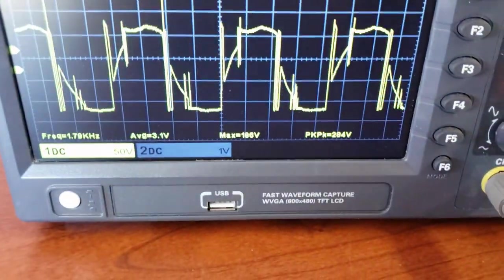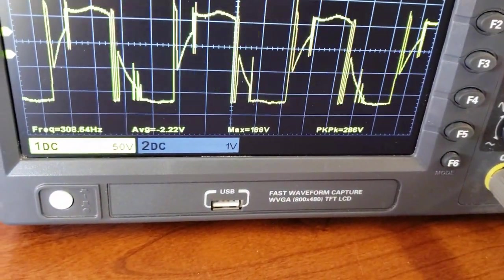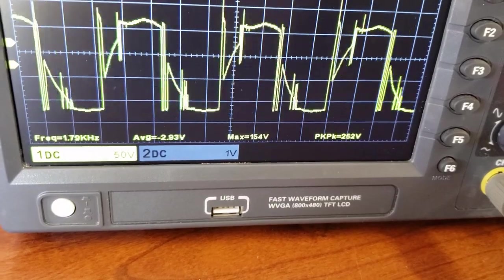Take a look at that peak voltage and the crazy waveform. Each square represents 50 volts and the frequency varies widely.